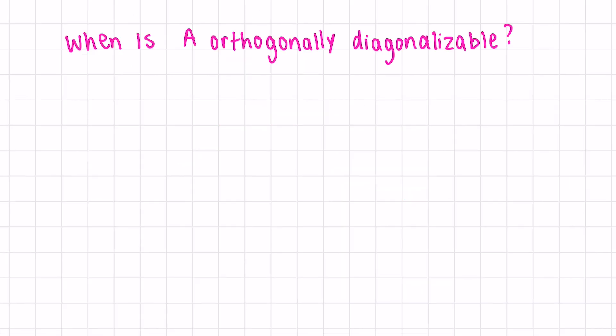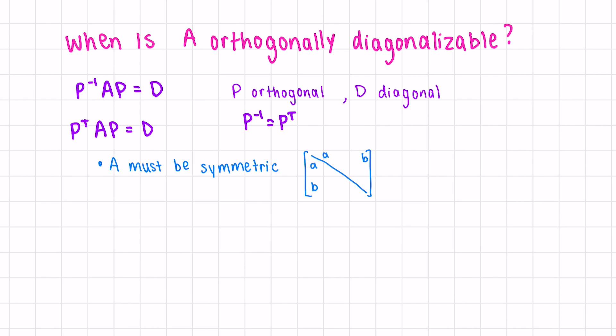A matrix A is considered orthogonally diagonalizable when there exists P inverse AP that equals a diagonal matrix, where P is orthogonal. If P is orthogonal, we know that the inverse is equal to the transpose, so we could equally write this as P transpose AP equals D. This is true when A is symmetric. This means that the elements across the diagonal are equal, or a more mathematical way to put this would be that the matrix is equal to its transpose.